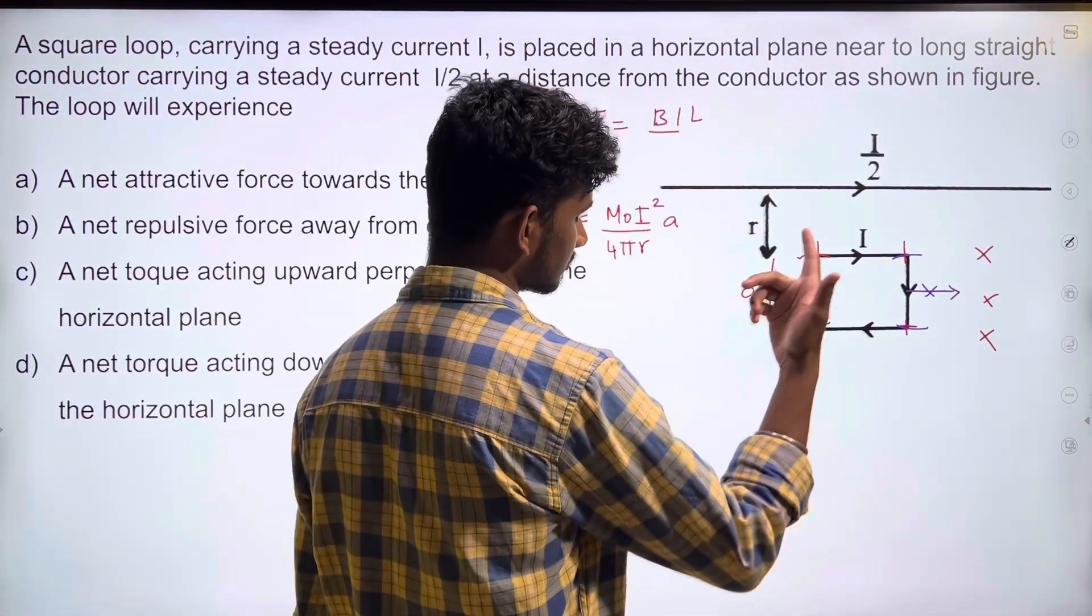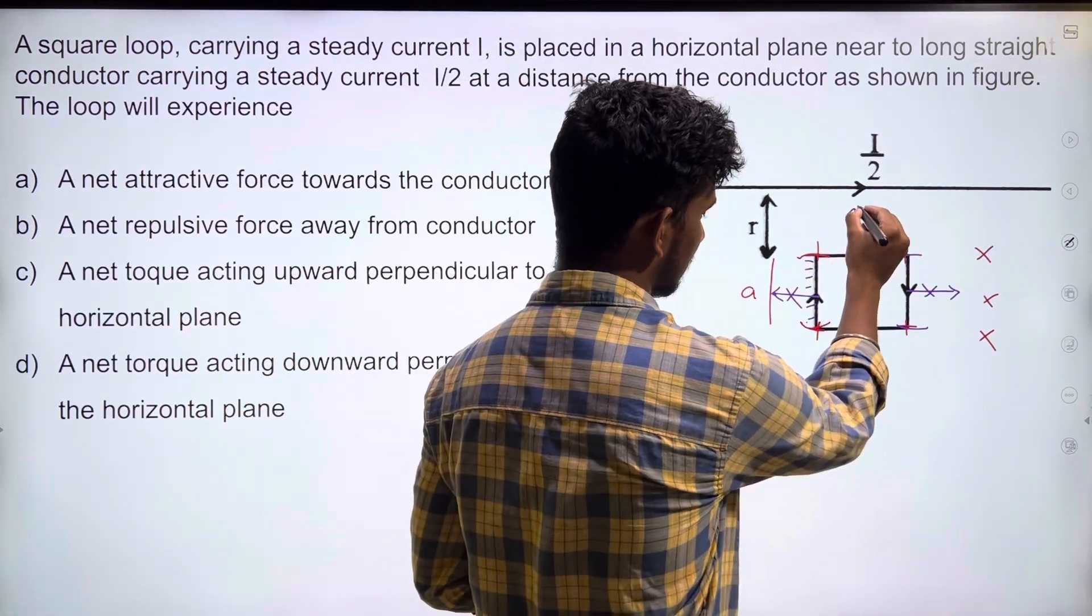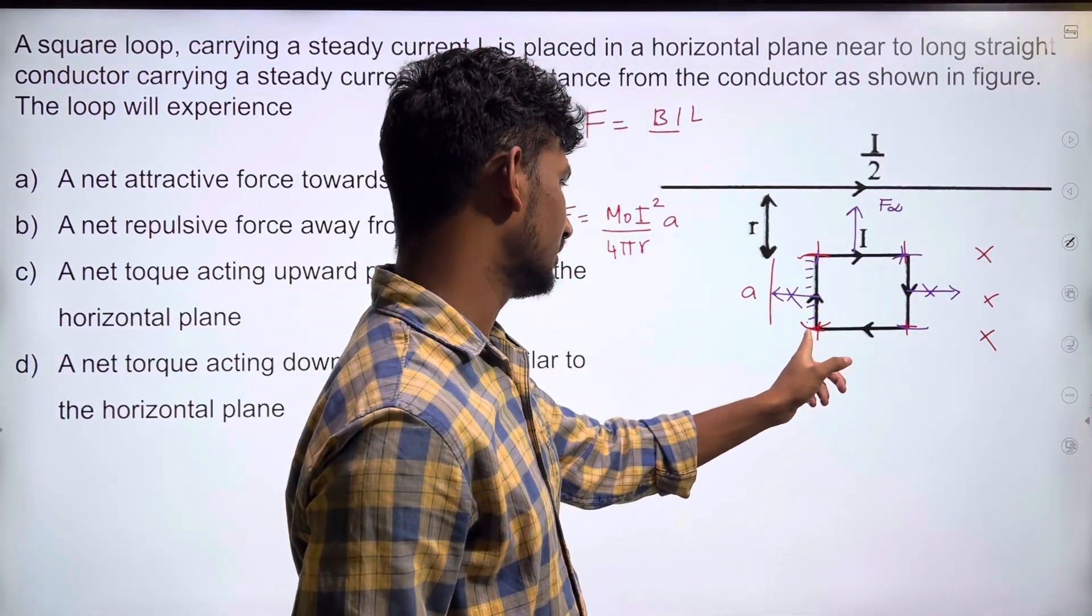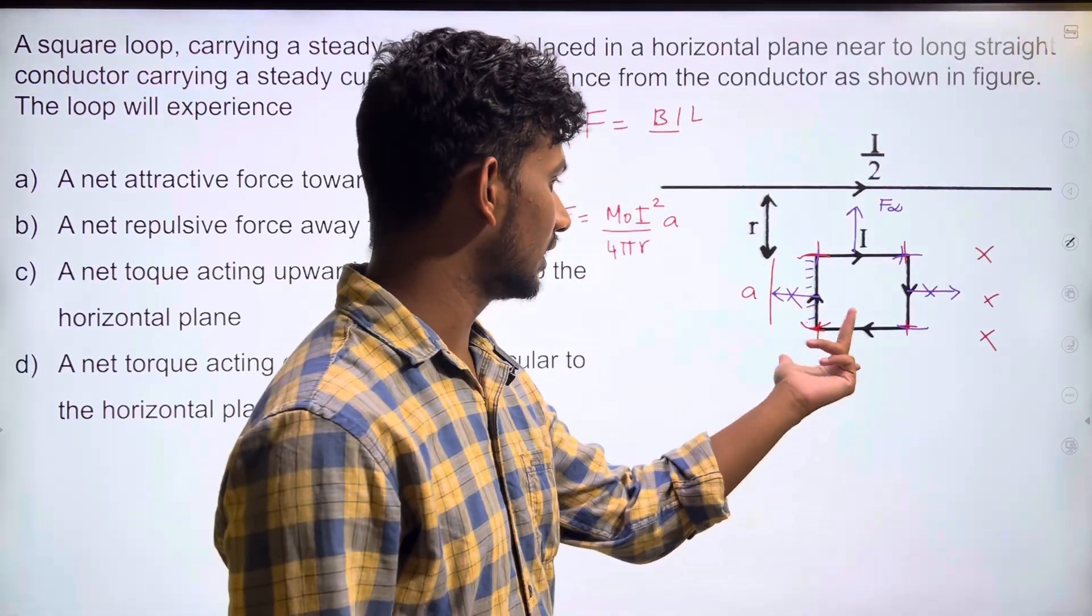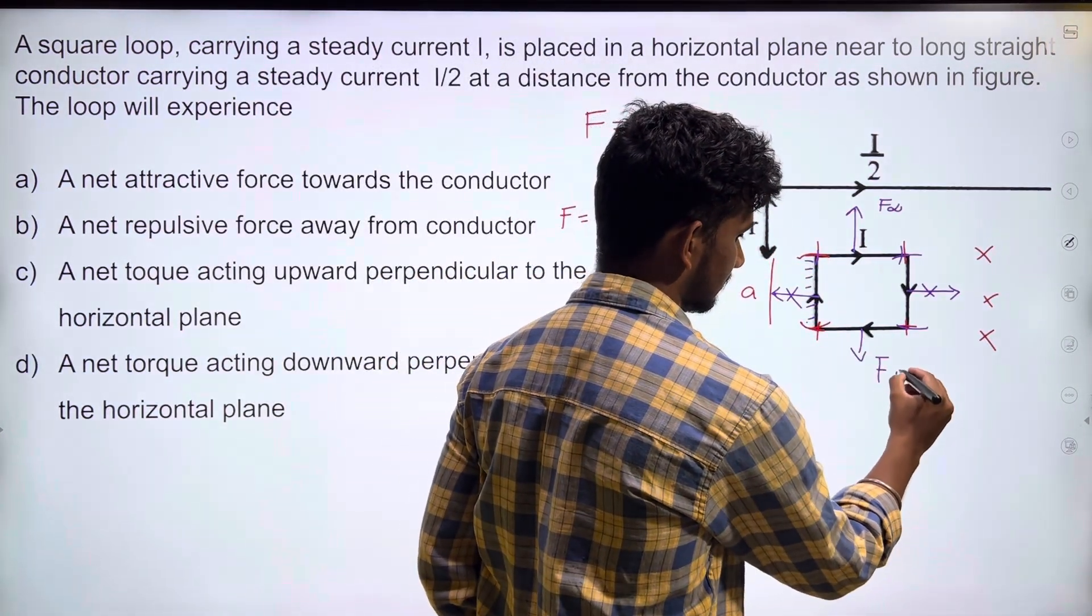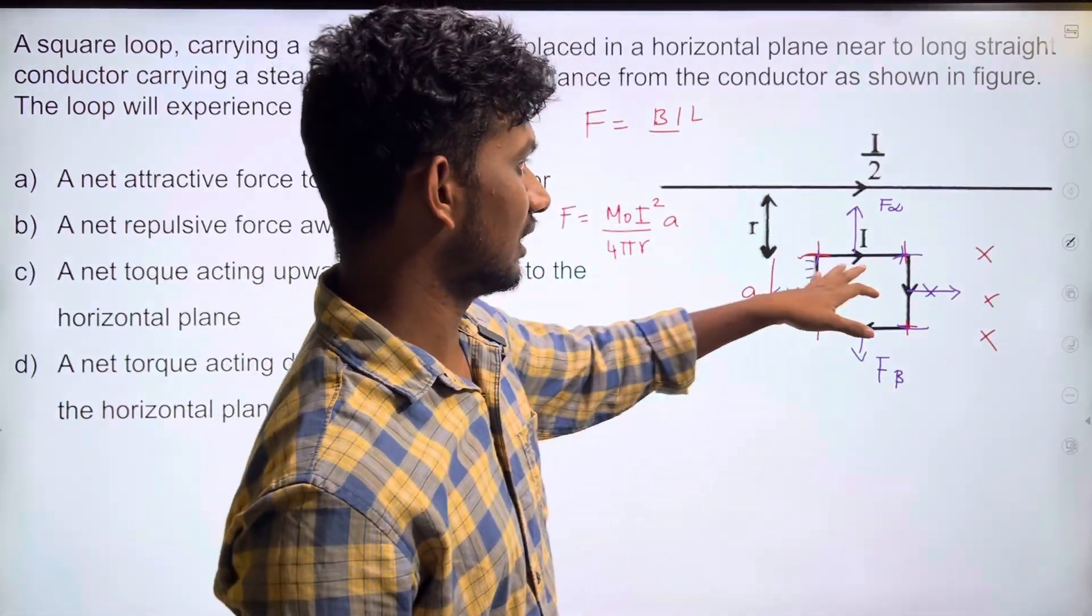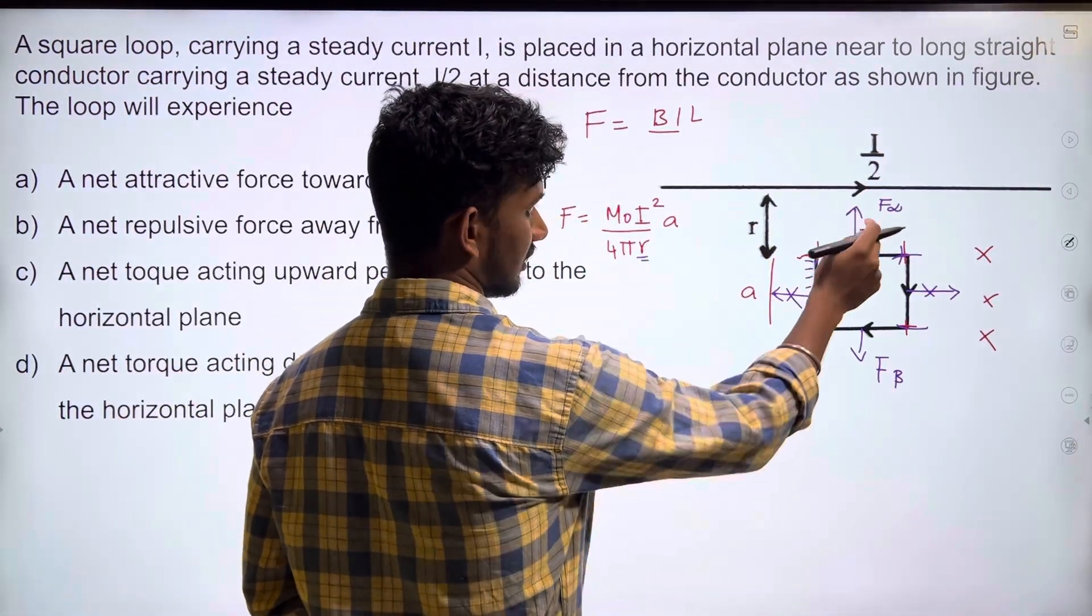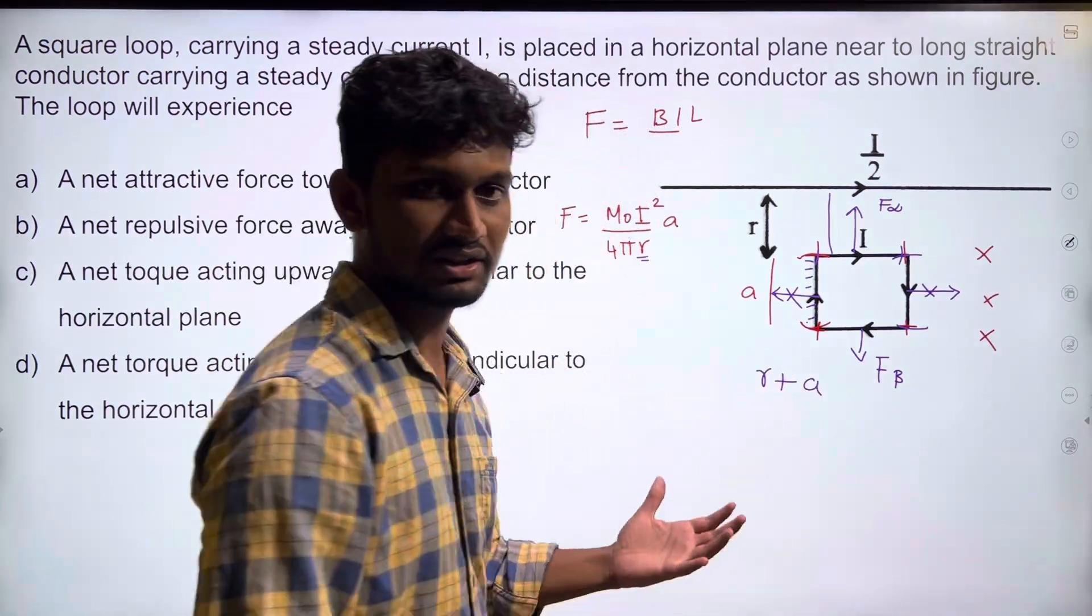For the remaining conductors, using left-hand rule: magnetic field is inward, current is in this direction, so force will be in this direction - let's call it F_alpha. For the other side, force will be F_beta. These forces are equal and opposite so they get cancelled, but they are not equal because the distances are different. For F_alpha the distance is r, but for F_beta the distance is r + a.